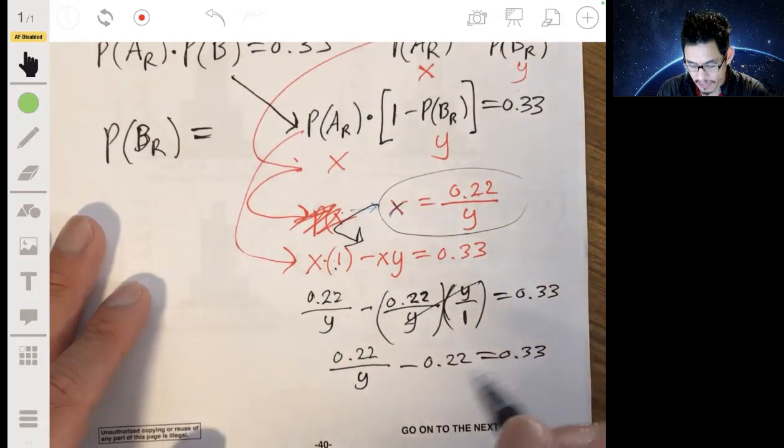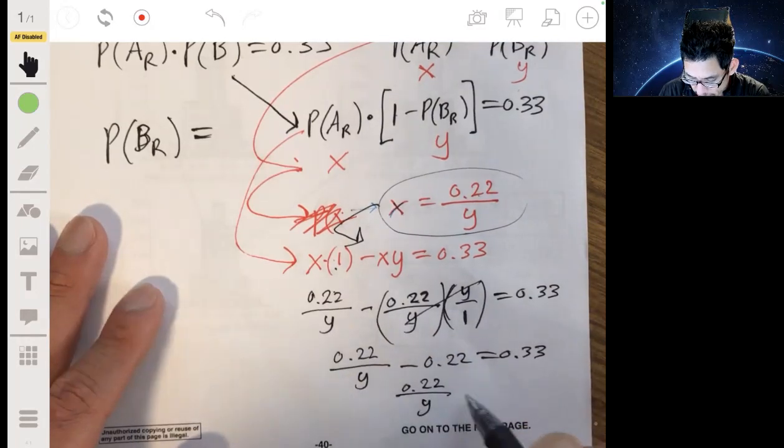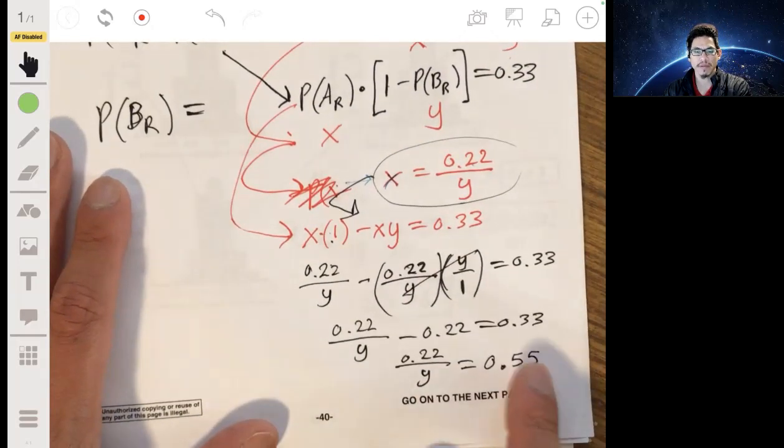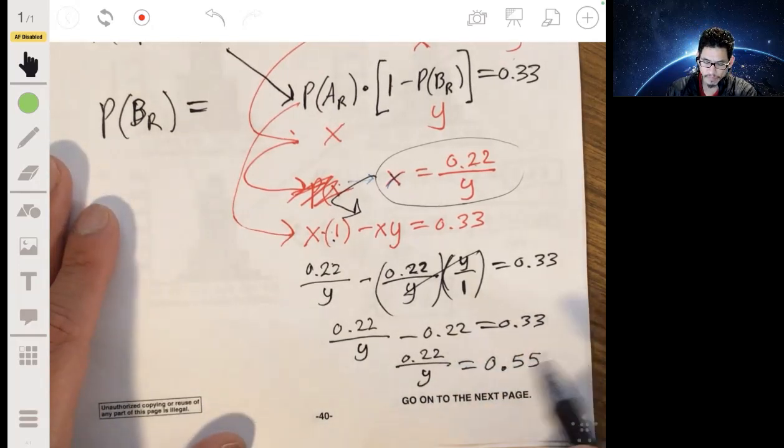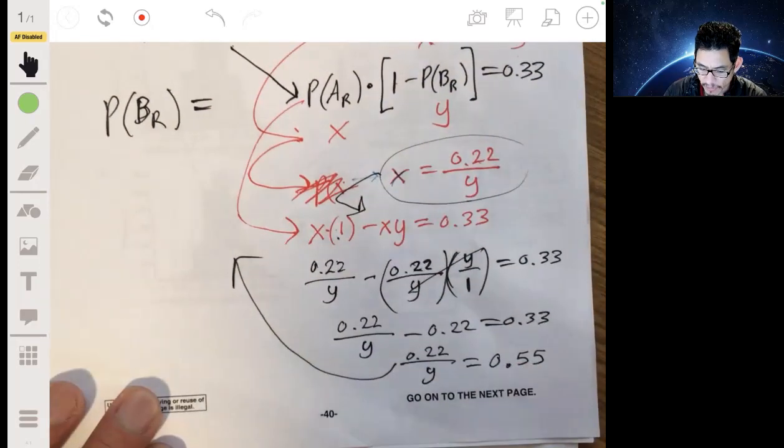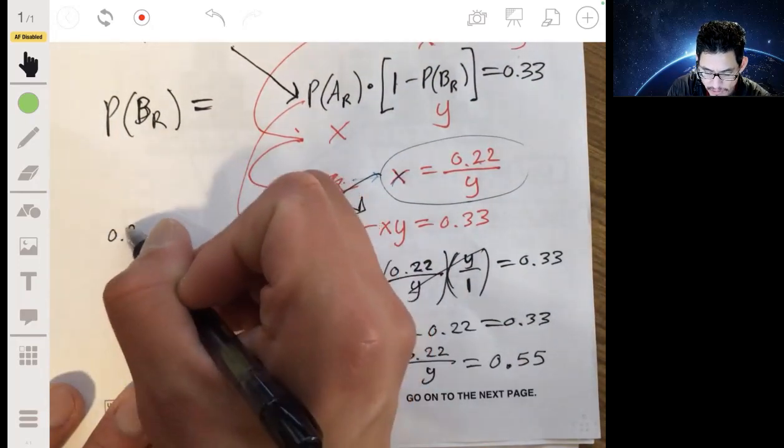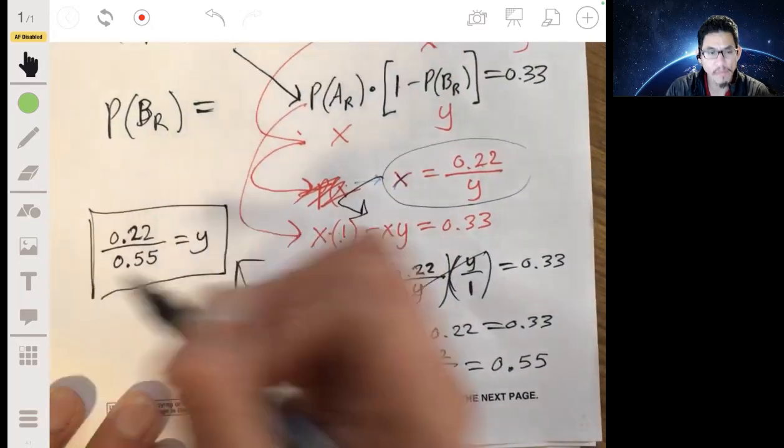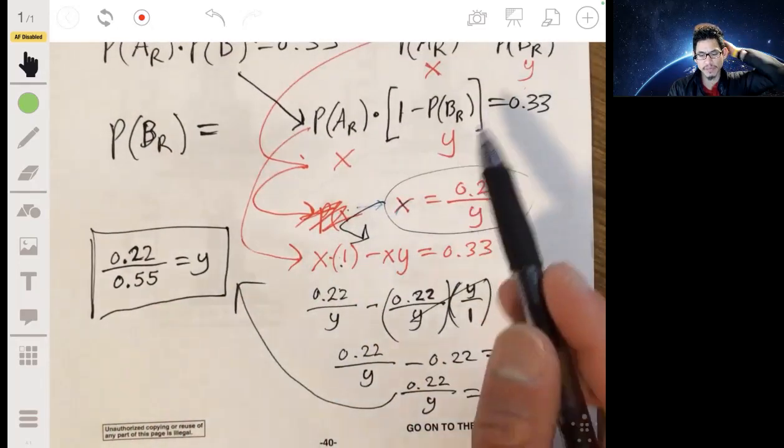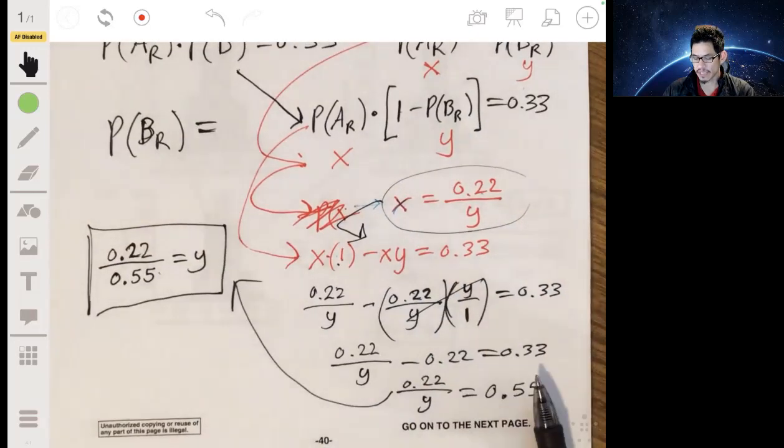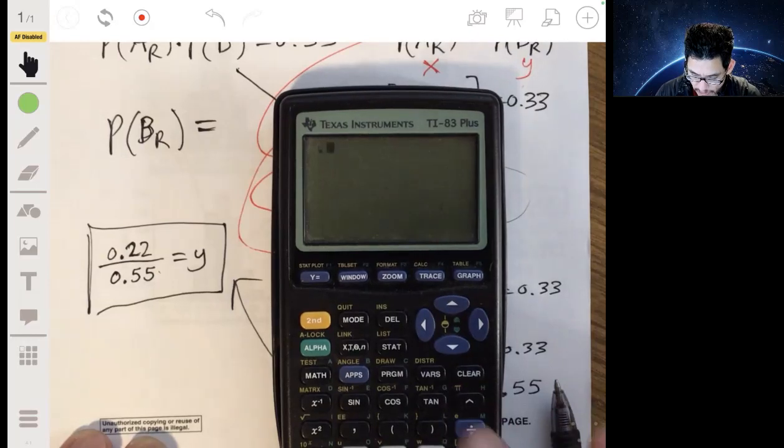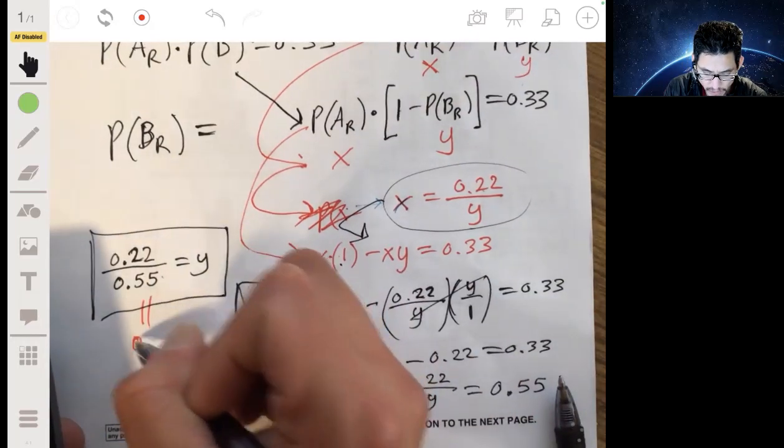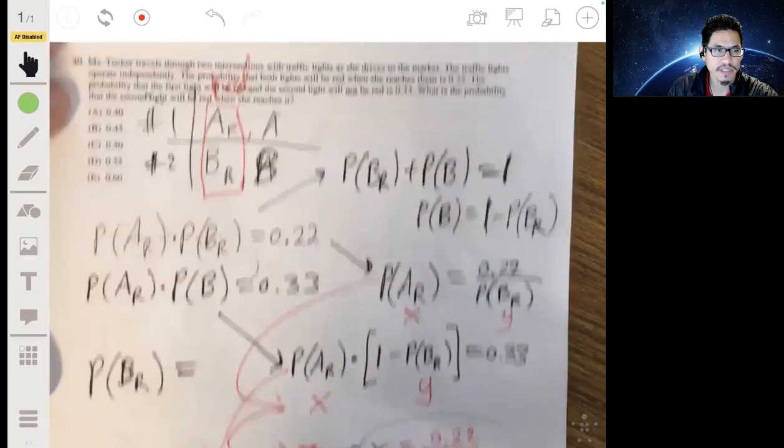Let me add the 0.22 to both sides. So I'll get 0.22 over Y is equal to 0.55. Multiplying both sides by Y. Let me go back over here and divide it by 0.55. I'll get that 0.22 over 0.55 equals Y. And Y was just what I used for the probability of the second light being red. So calculating that with our calculator, 0.22 divided by 0.55. And bang, get 0.4. 0.4.